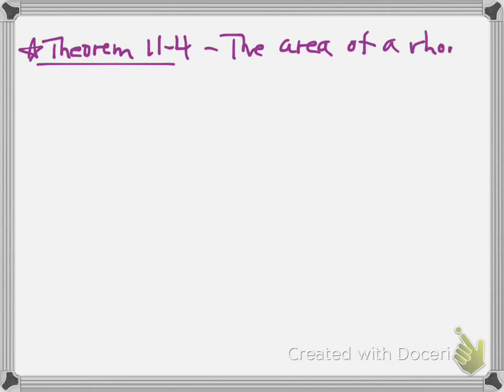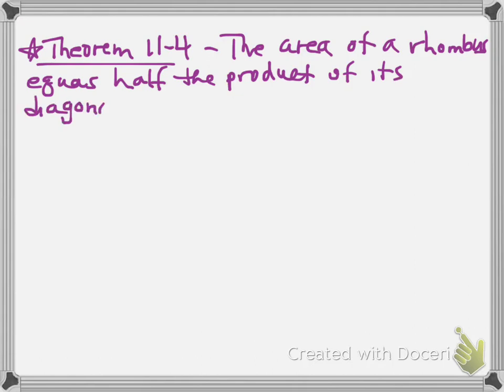So here comes the weird guy. He's the stand-alone weirdo, theorem 11-4. So the area of a rhombus equals half the product of its diagonals. So the formula is A equals one-half d1 times d2.